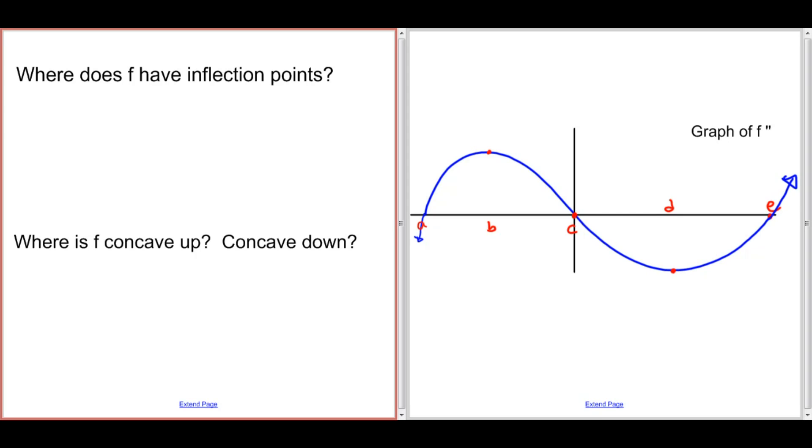Let's now take a look at the graph of f double prime and make similar conclusions about f. Now, from f double prime, we cannot conclude anything about f being increasing or decreasing, because for that we need f prime. And if you have f double prime, we have to go up the ladder of derivatives, and we can't do that yet.